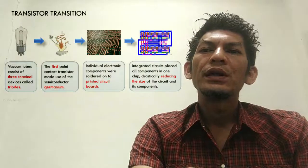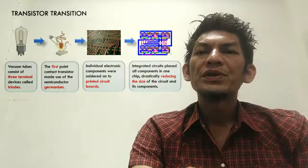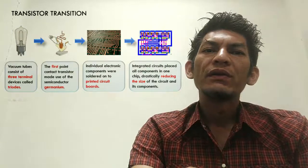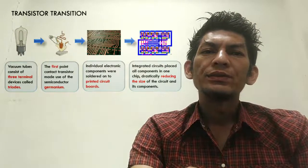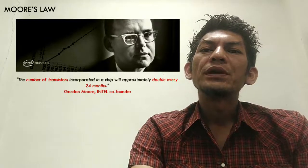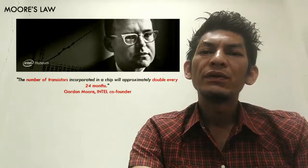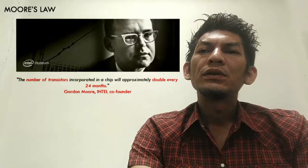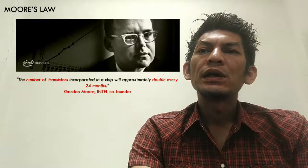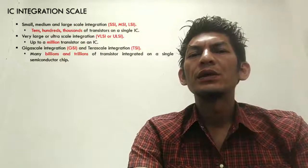For transistor transition, the technology started with the vacuum tube, then moved to the first point contact transistor, until now we have the technology of integrated circuit. About Moore's Law: the number of transistors incorporated in a chip will approximately double every 24 months. Any technology now is related to Moore's Law.